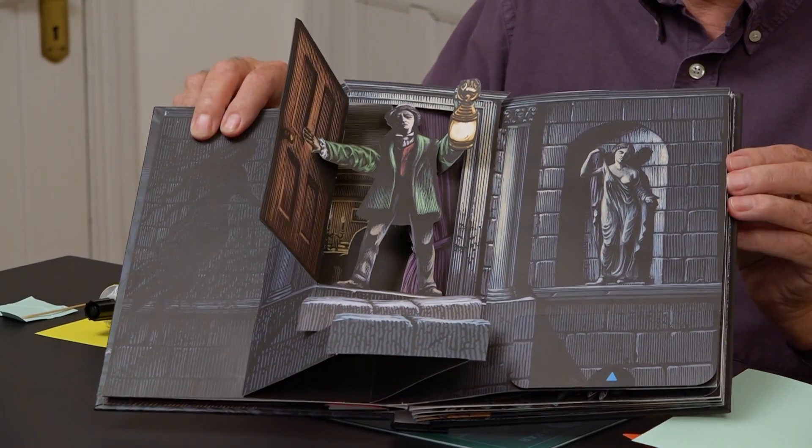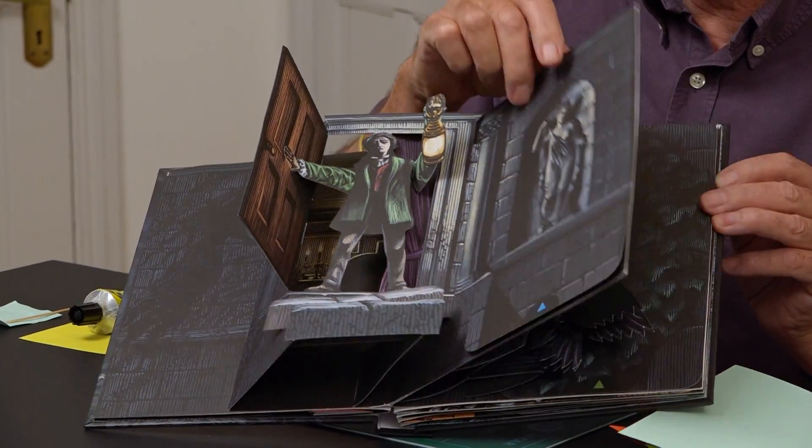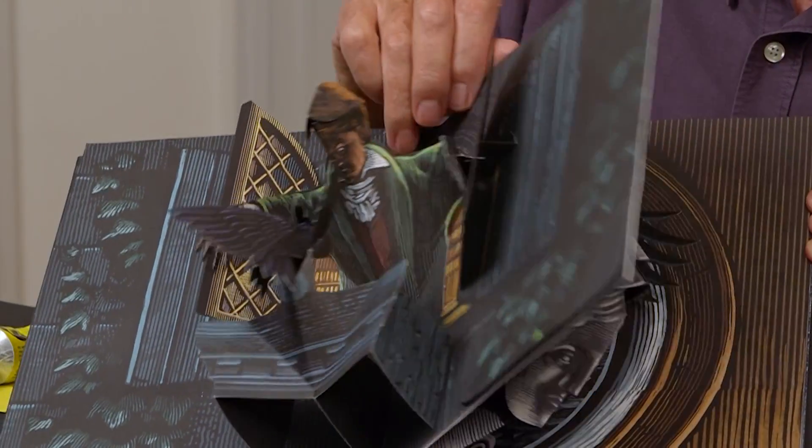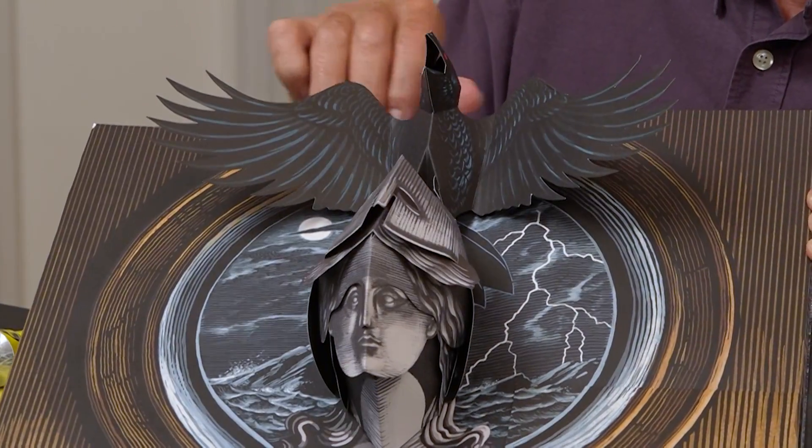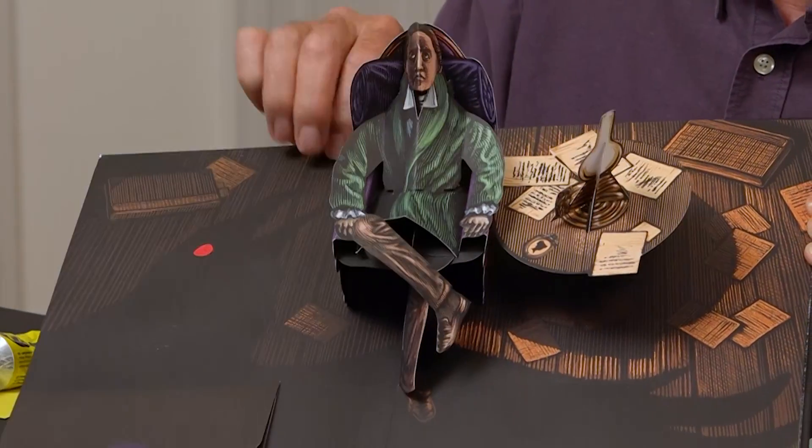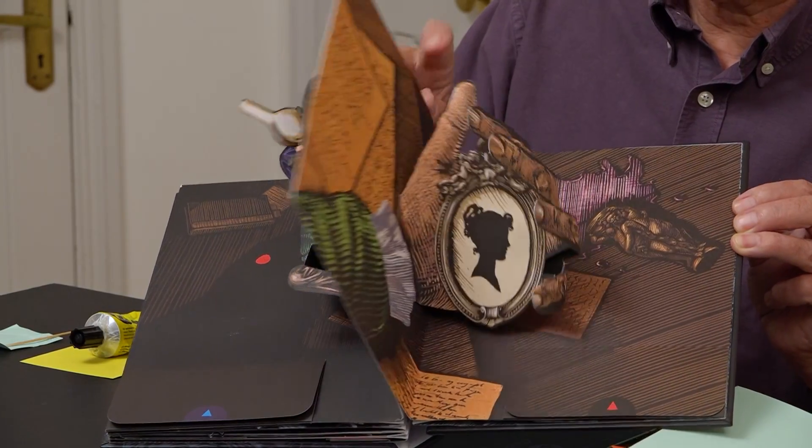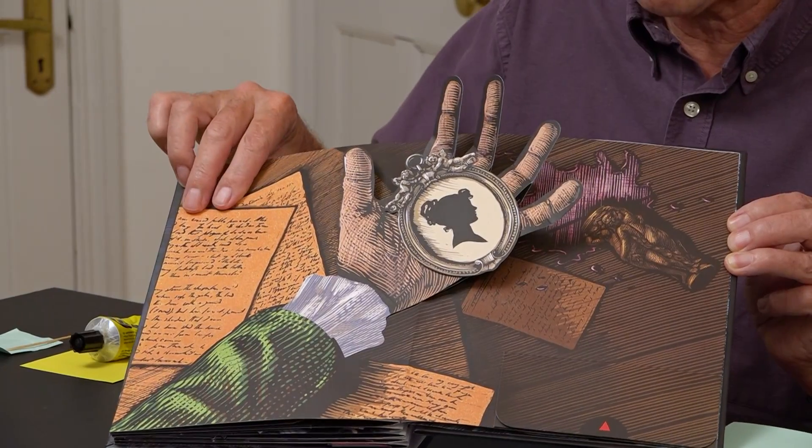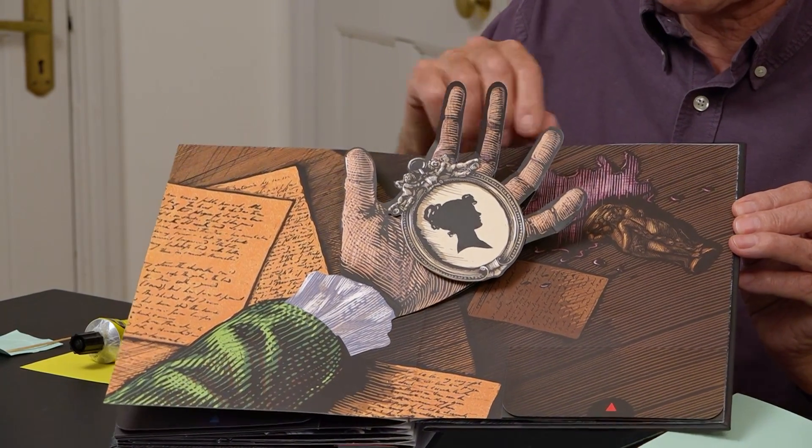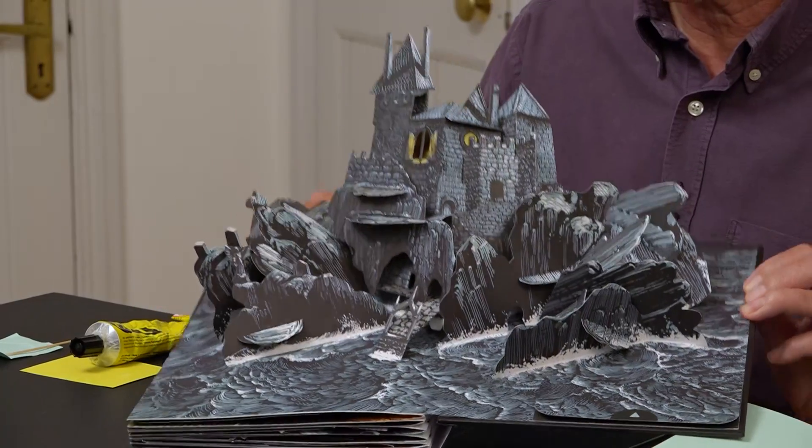These are the spreads. So this is the unfurling mechanism. This is the one I'm going to explain in this tutorial and then this is the end of the book.